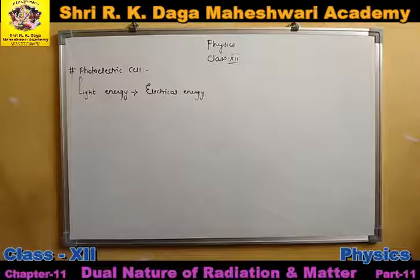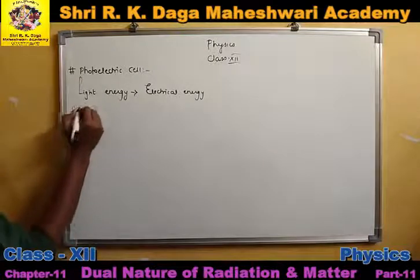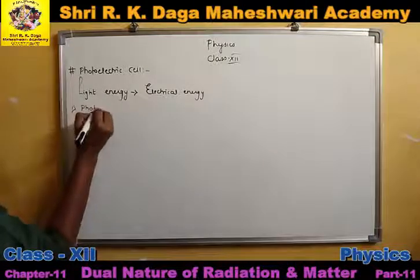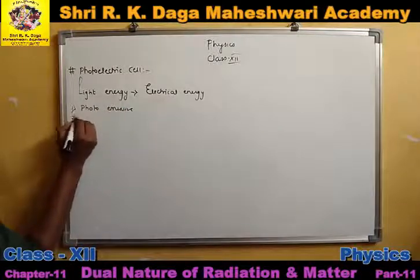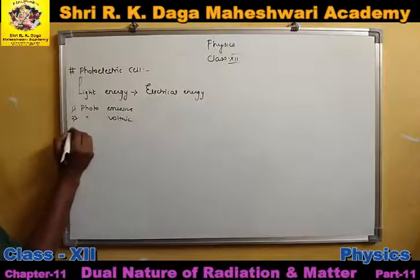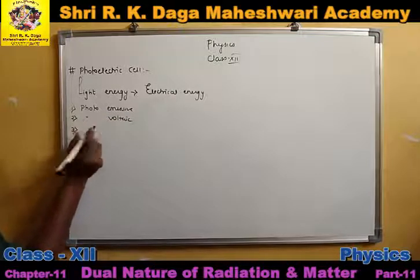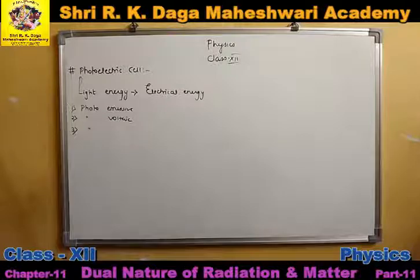Basically, photoelectric cells are of three types: photoemissive, photovoltaic, and photoconductive.